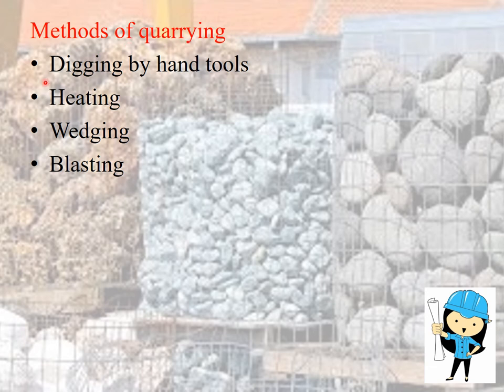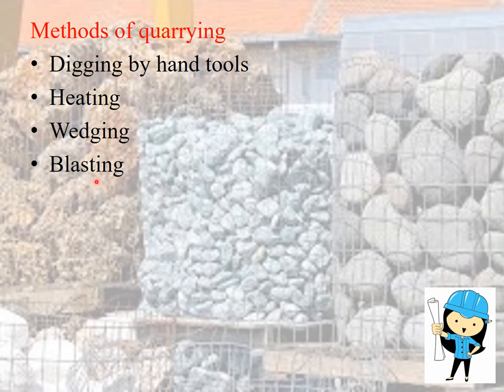There are four methods of quarrying. The first method is digging by hand tools, used for soft stones. The second method is heating, used for small blocks to get a regular shape output. The third method is wedging, which involves splitting rocks — adapted for sedimentary and soft rocks, especially sandstone, limestone and marble. The fourth method is blasting, which is especially used for hard stones.